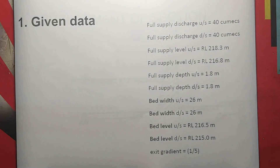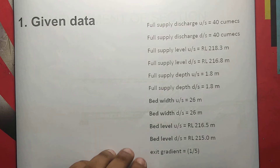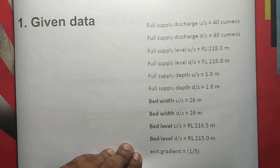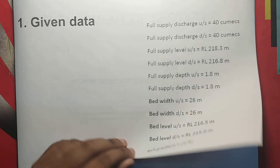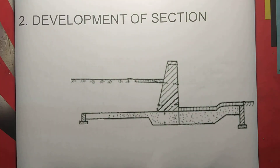Now we are going to go to given data. Given data: full supply discharge upstream is equal to 40 cumecs. Full supply discharge downstream is equal to 40 cumecs. Now we are going to explain all the data. On this page, we are going to start the first step, and we are going to discuss the development of section.